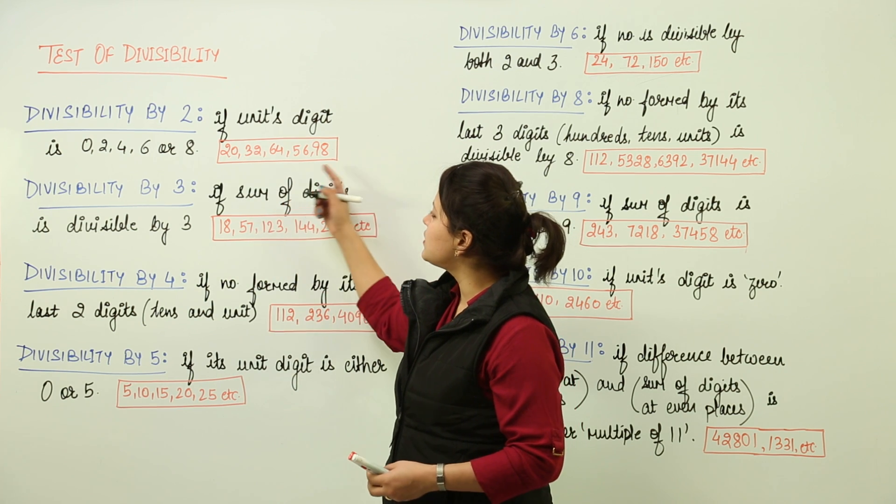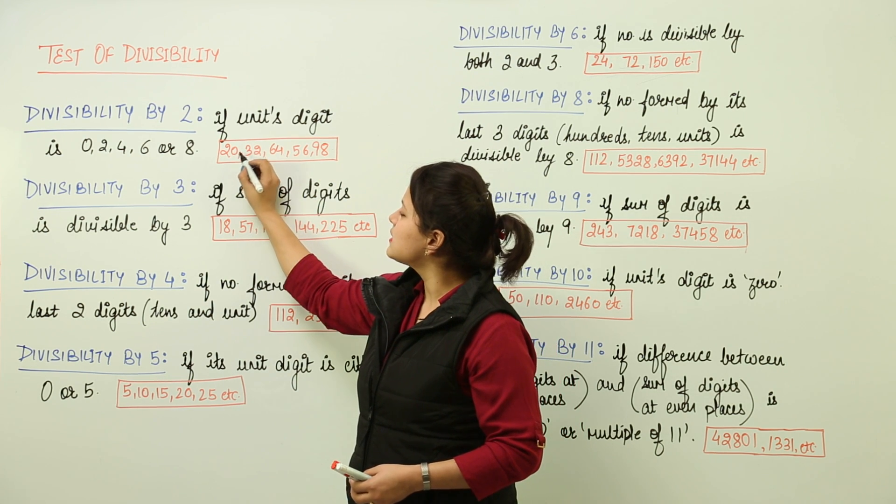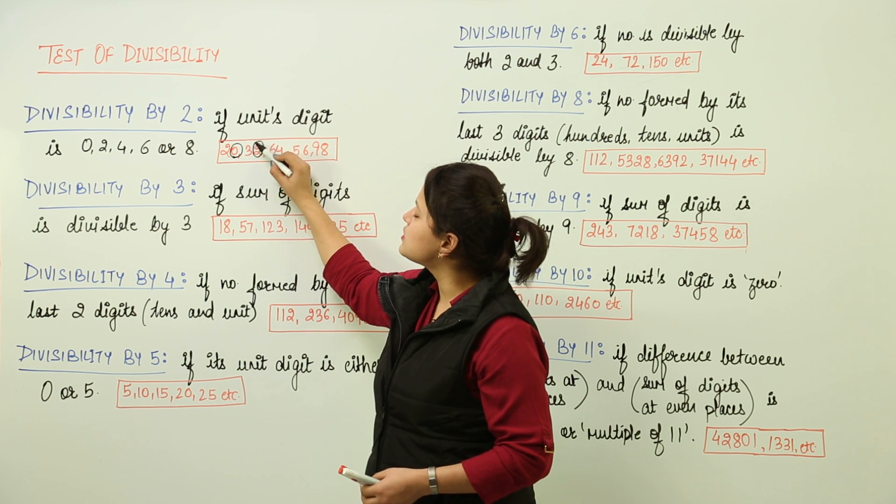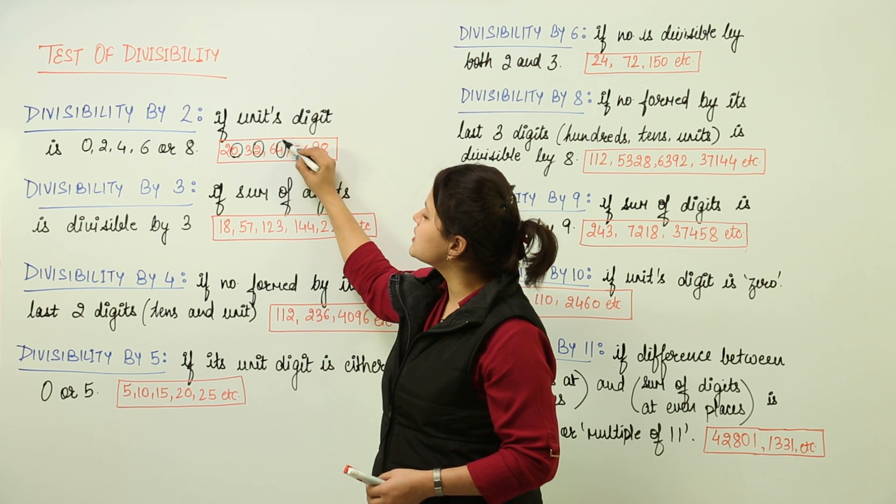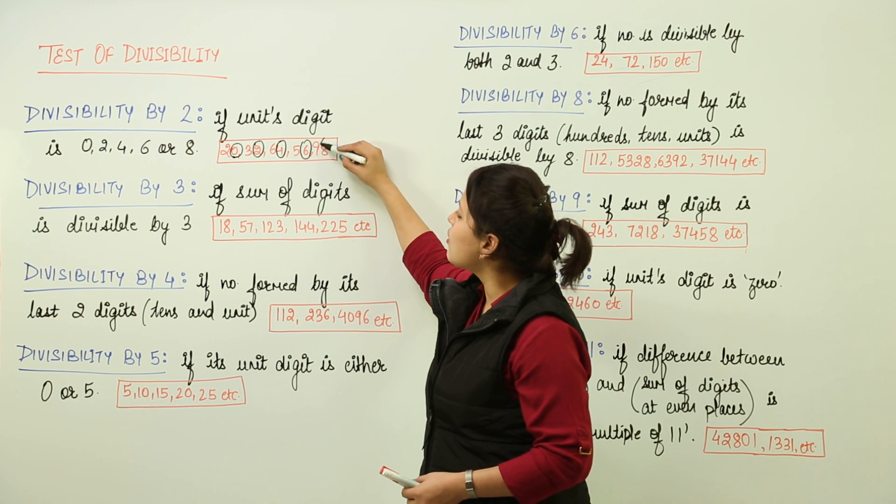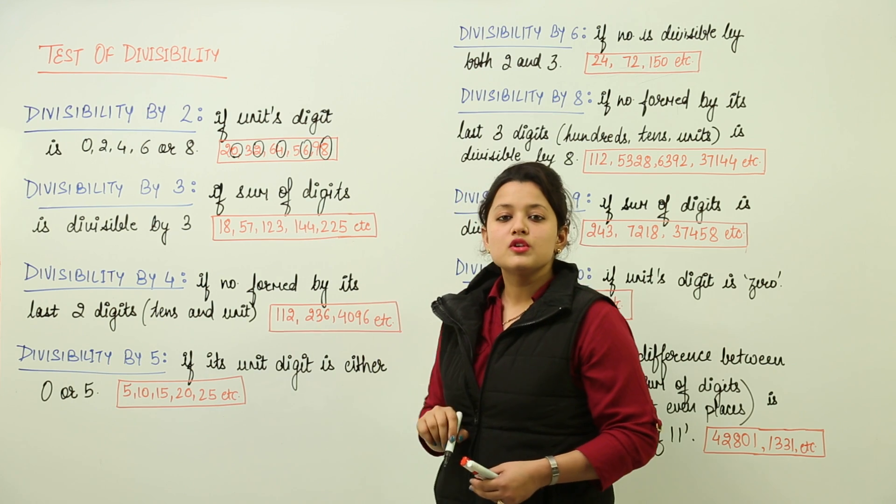You can see over here the examples that I have written. Here the units place has the digit 0, the units place of 32 is 2, units place of 64 is 4, units place of 56 is 6, units place of 98 is 8.